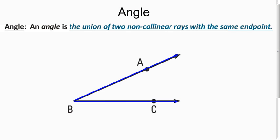So here we have ray BA and we have ray BC. Put them together and we get angle ABC. What's the interior and the exterior of an angle?